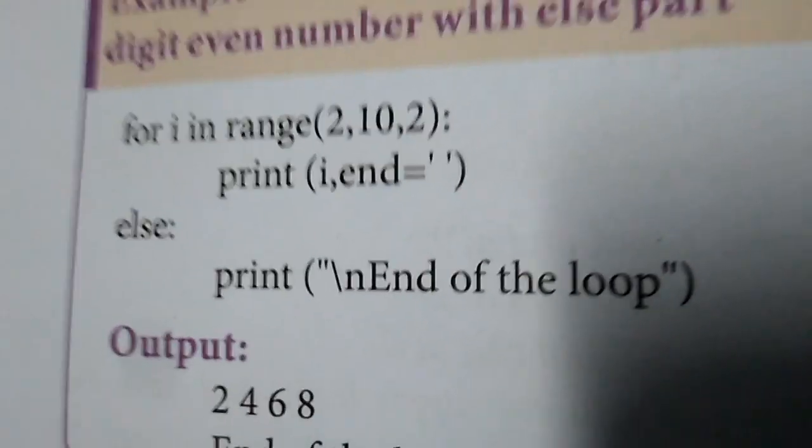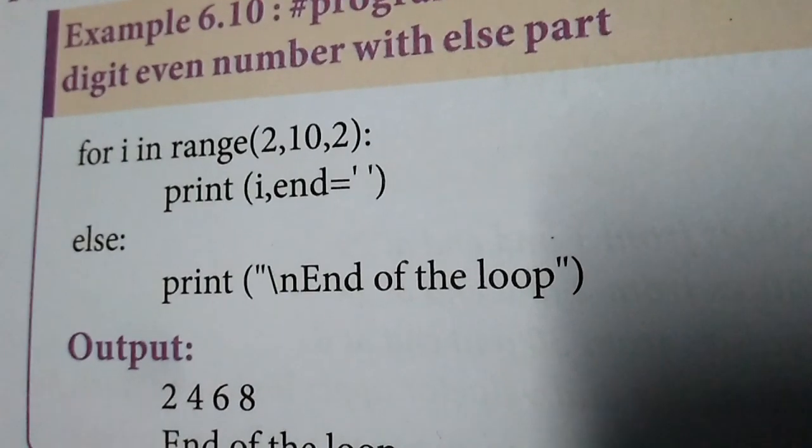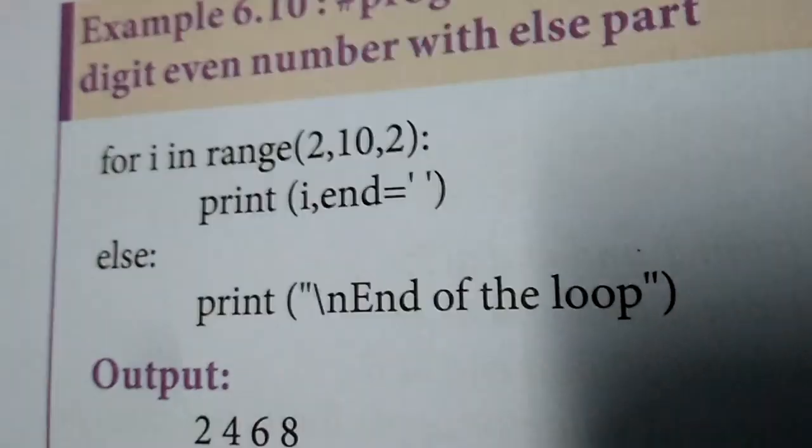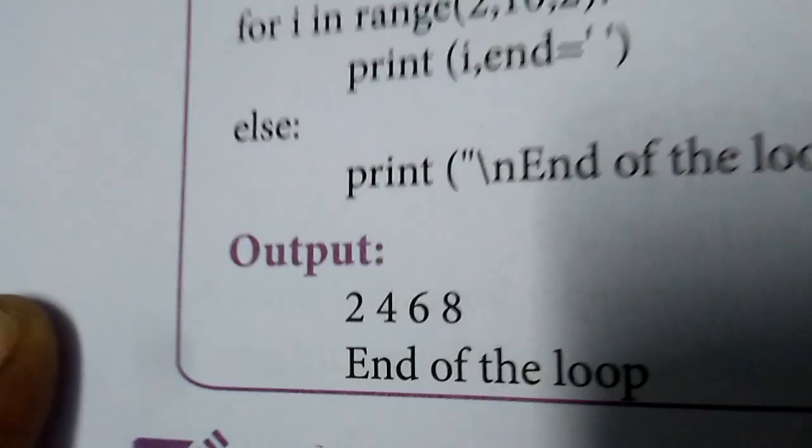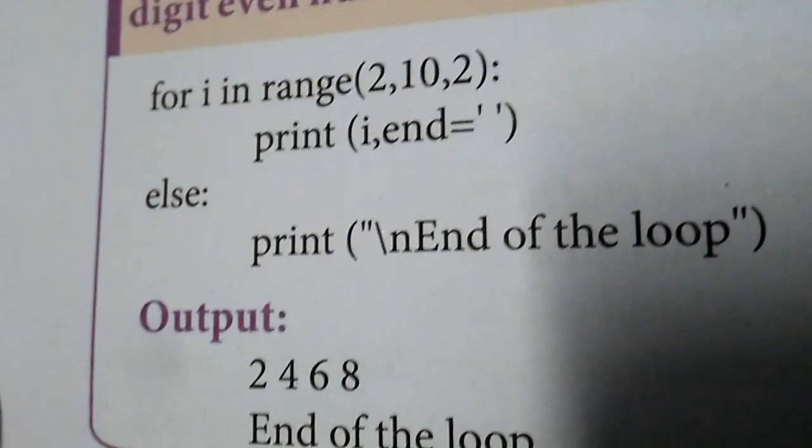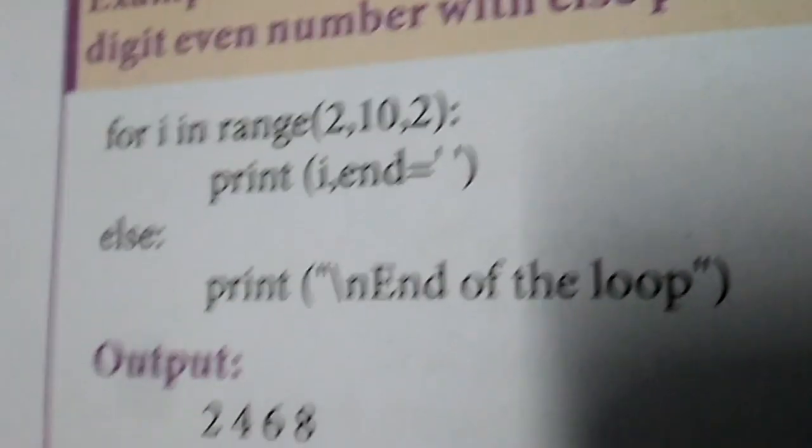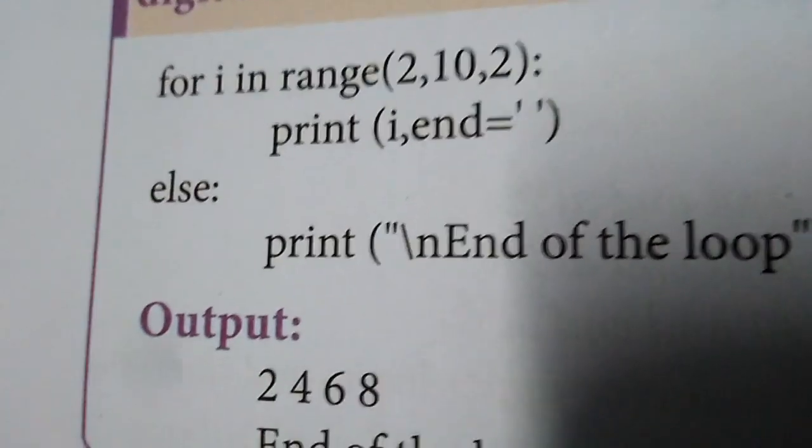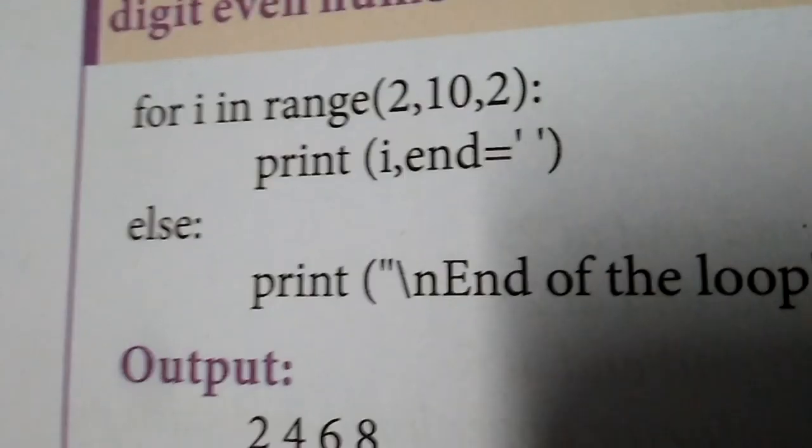In the else part, it will be executed after when it reaches the condition. If I have two, ten, eight, and I go to the end of the loop, again it checks for 10. When it reaches the end of the loop, you can display 'end of the loop'. That is the else loop.